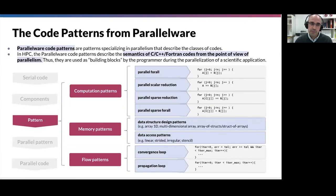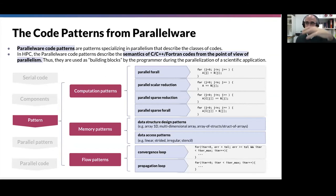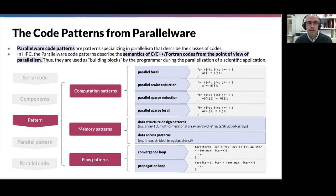From another perspective, we have Parallelware tools and the patterns they provide. Motifs focus on the science; Parallelware focuses on the code. We are trying to understand the relation between the science and the code, and what is in between — how to make the link. Parallelware code patterns describe patterns in the code, not in the algorithm or the science, but in the code that you are compiling and running on a machine, specializing in parallelism and trying to discover classes of codes from the point of view of parallelism.